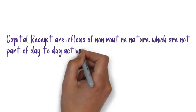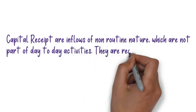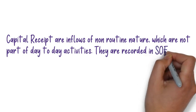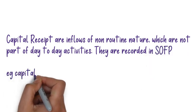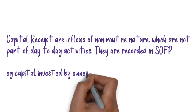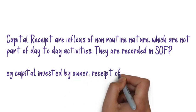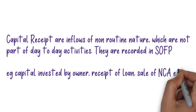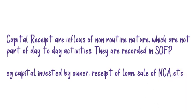Examples of capital receipts include capital invested by the owner — the owner won't be investing on a daily or monthly basis, making it non-routine. A loan received from the bank is also a non-routine transaction. Selling non-current assets is another example, as these assets are not sold on a daily or weekly basis since they are in use in the business. These are recorded in the statement of financial position, the balance sheet.